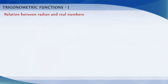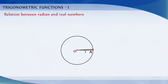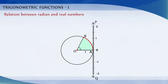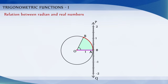Relation between radian and real numbers. Consider the unit circle with center O. Let A be any point on the circle. Consider OA as the initial side of an angle. The length of an arc of the circle will give the radian measure of the angle which the arc subtends at the center. Consider the line PAQ which is tangent to the circle at A. Let A represent the real number 0, AP represent positive real numbers, and AQ represent negative real numbers. If we wrap the line AP in the anticlockwise direction along the circle and AQ in the clockwise direction, then every real number will correspond to a radian measure and conversely. Thus, radian measures and real numbers can be considered as one and the same.